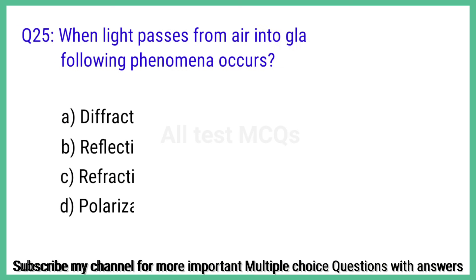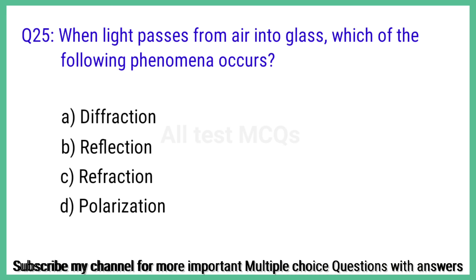Question number 25. When light passes from air into glass, which of the following phenomena occurs? The right answer is option C: Refraction.